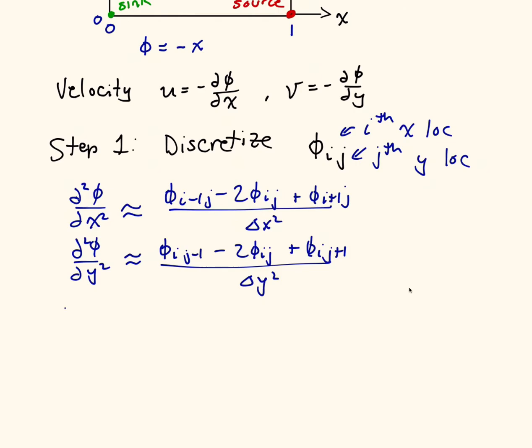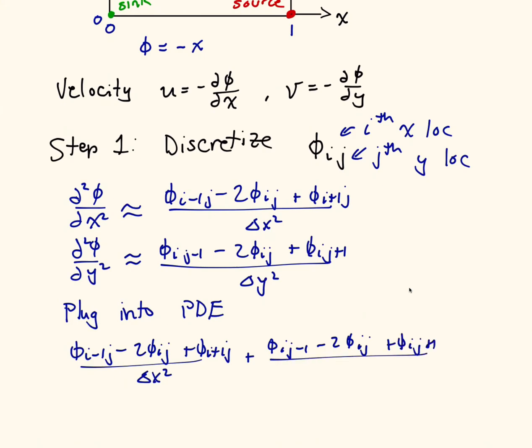Now I'm going to plug these into the PDE. And if I do that, I can write this as φ_i-1,j minus 2 φ_ij plus φ_i,j+1 all over Δx squared plus φ_i,j-1 minus 2 φ_ij plus φ_i,j+1 all over Δy squared equals 0.